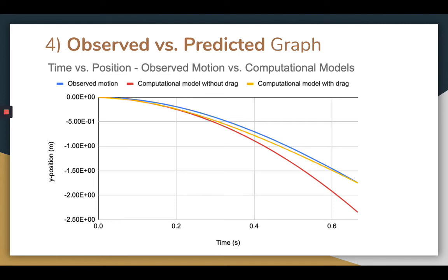To improve our model with drag further would require a better understanding of the drag force and possibly other equations that factor in more than just the velocity of the box. Additionally, using a spherical object instead of a box would reduce the chance that the drag force would vary as the object falls. Both these changes would make the model more accurate.